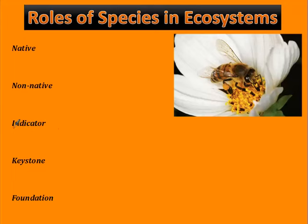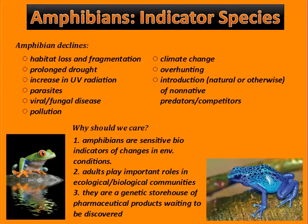Indicator species are types of species that provide early warnings of damage to a community or an ecosystem. Amphibians are found worldwide and are actually really good indicator species, because population changes in amphibians due to environmental changes signal that something is going on. If we see amphibian species going down, we know that something's happening in that environment.